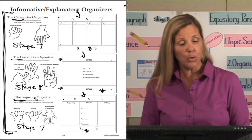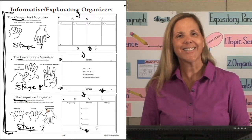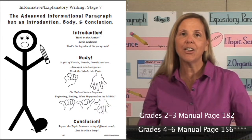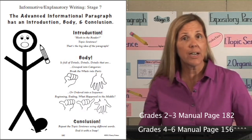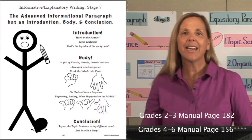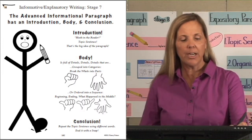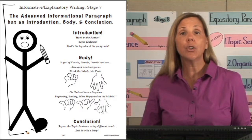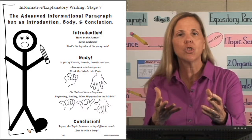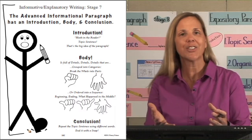The lesson will be a Stage 7 using the sequence organizer. If you are in the 2-3 writing manual, begin on page 182. If you are in the 4-6 writing manual, begin on page 156. To begin Stage 7, let's walk through all the pages in this section. The first page is our chant, where we introduce Stage 7 so students know exactly what they're going to do. This is a perfect way to introduce this lesson to your students.